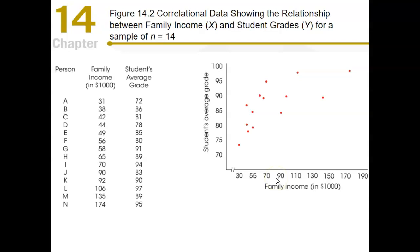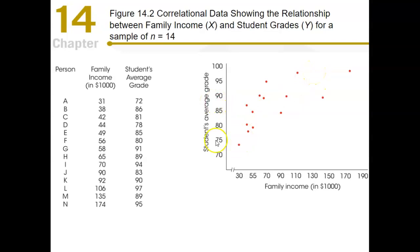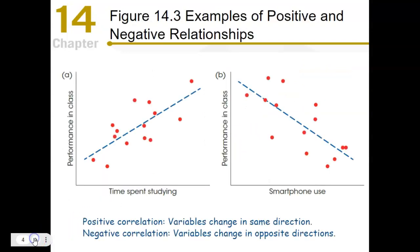It appears that as family income increases, so does the student's grade. We can see that there does appear to be a linear relationship here.